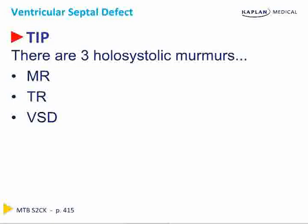Turbulent flow causes murmurs. VSDs tend to be louder than tricuspid and mitral regurgitation because the smaller the hole, the more turbulent the flow, and the louder the murmur. Loud holosystolic murmurs are more likely to be VSDs in children, because mitral valves are large and produce a quieter, more competent holosystolic murmur. So a loud pansystolic murmur — think VSD.